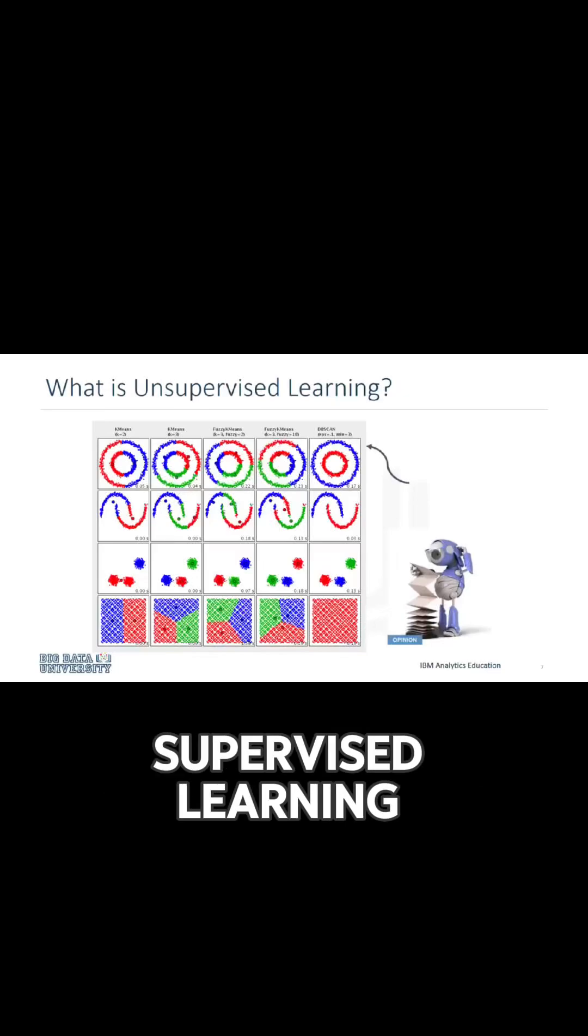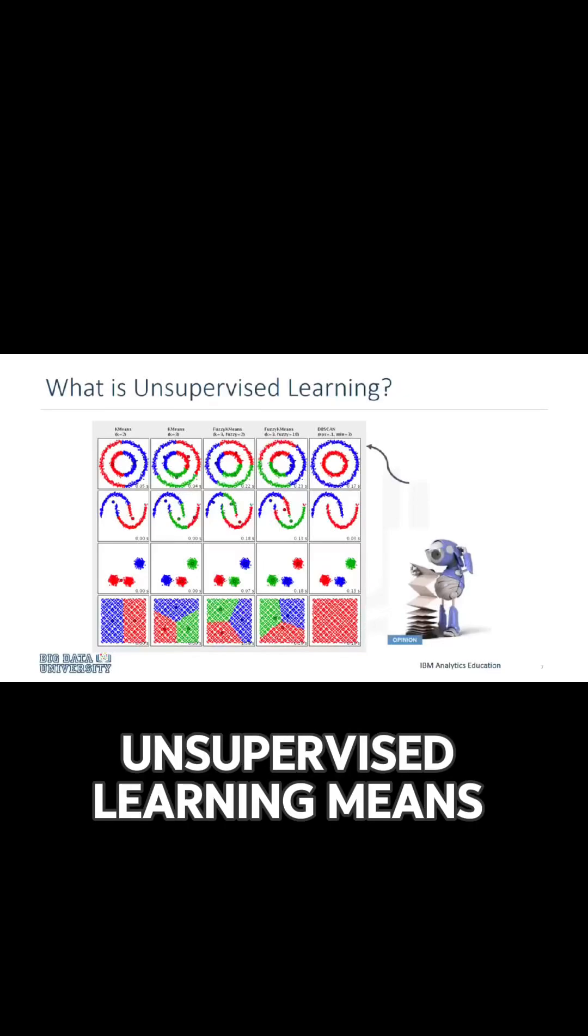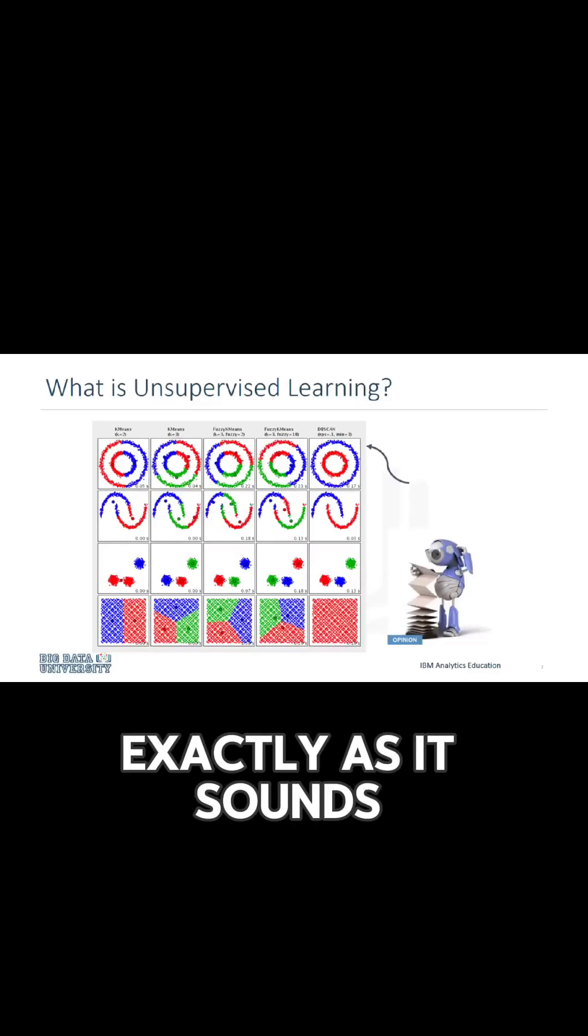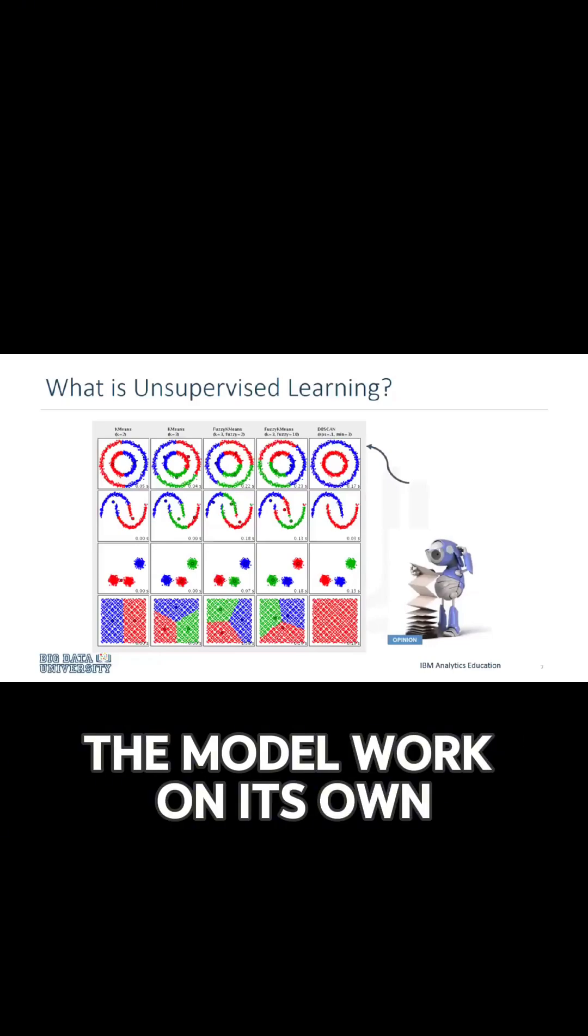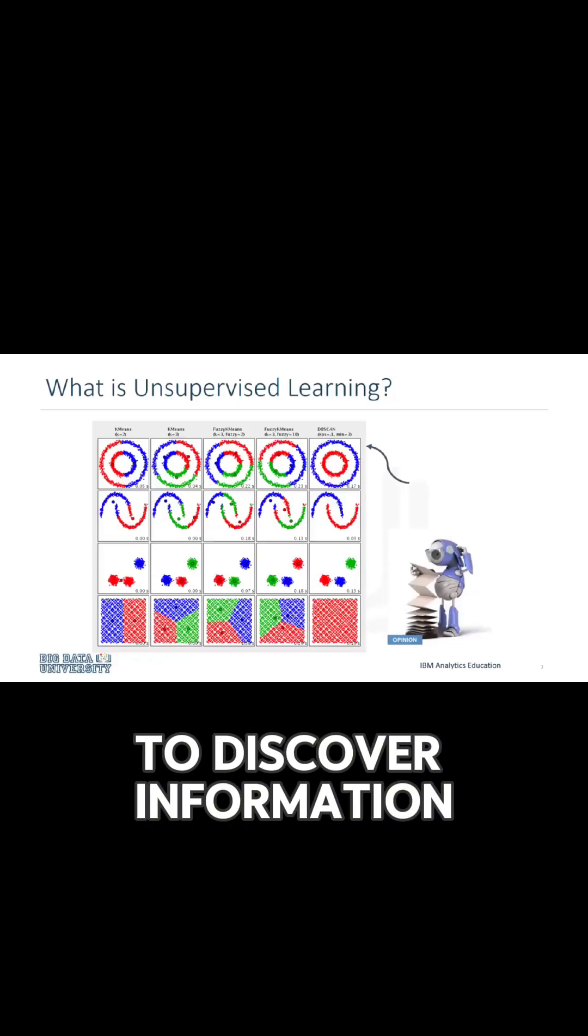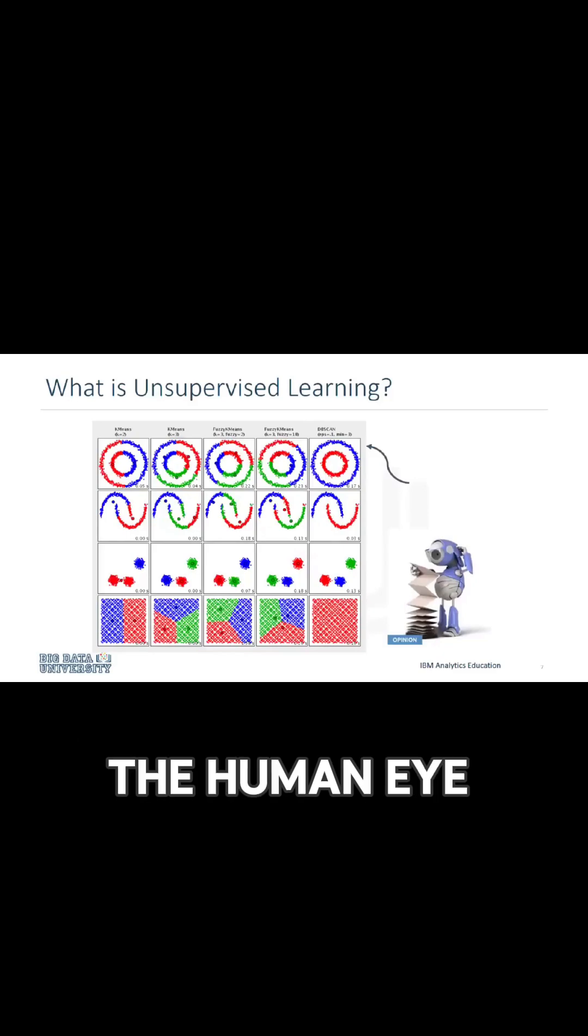Since we know the meaning of supervised learning, what do you think unsupervised learning means? Unsupervised learning is exactly as it sounds. We do not supervise the model, but we let the model work on its own to discover information that may not be visible to the human eye.